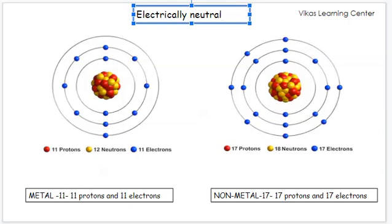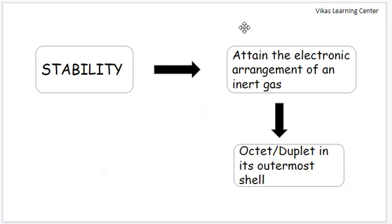So in order to attain stability, they attain the electronic arrangement of an inert gas, that is, either to have octet or duplet in its outermost shell.